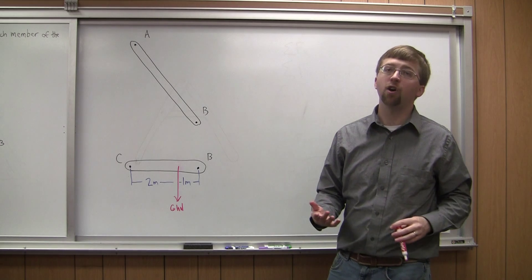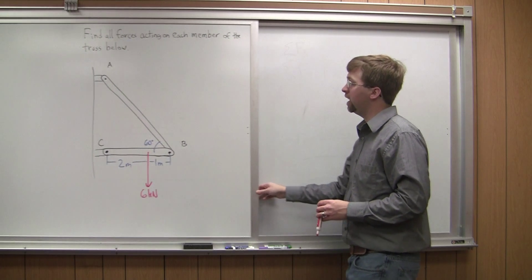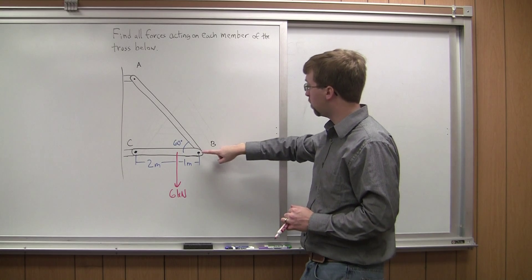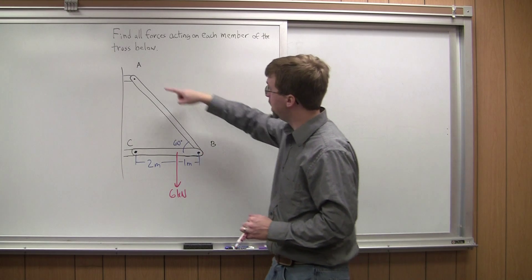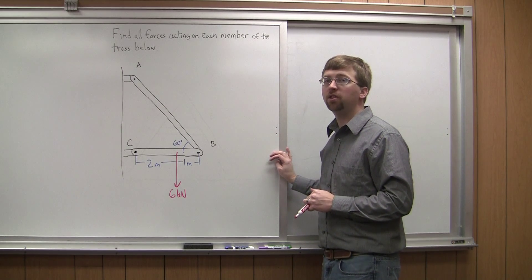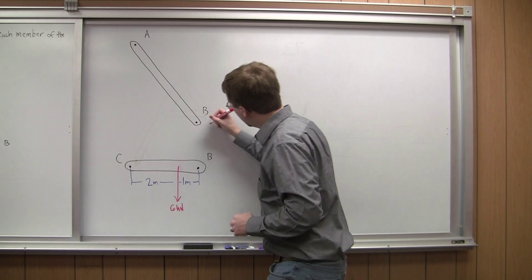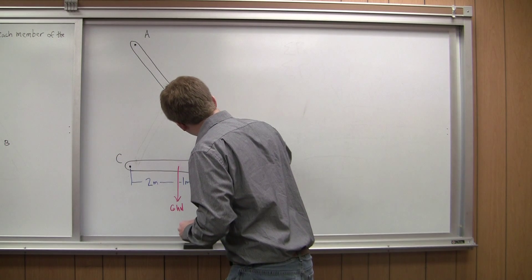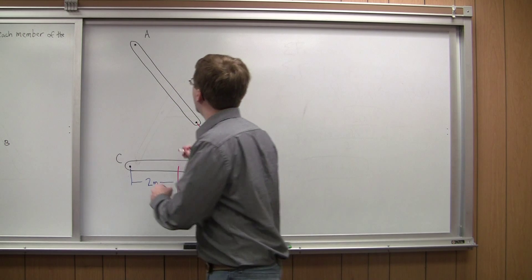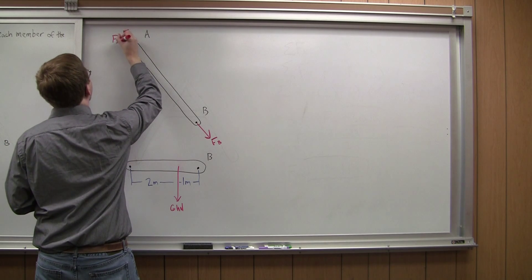The first thing that's really going to help me a lot with this problem is noticing that member AB right here is a two force member. It's only got forces acting on point B and point A. So with that in mind we know that this whole thing is either in tension or compression. I'm going to assume that the whole thing is in tension. I'm going to have force FB down here and I'm going to have force FA up here.